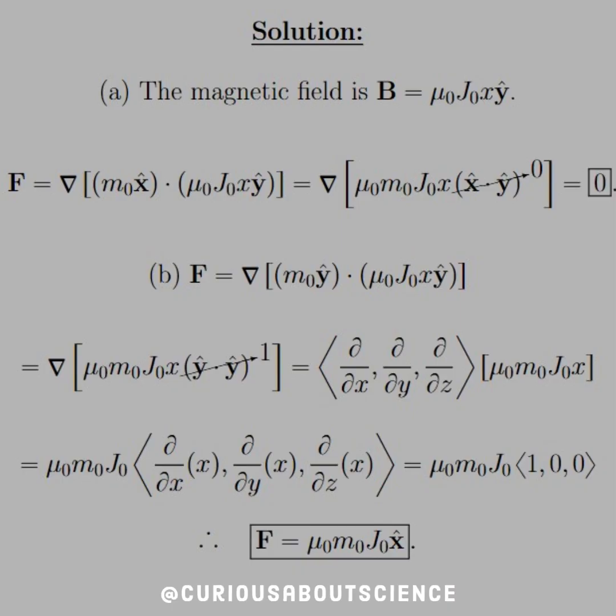For the magnetic field in this case, with the dipole pointing in X direction, the field is μ₀J₀x in the Y direction. We see that the current has to travel 90 degrees or orthogonal. The field has to be orthogonal to the current, so that makes sense.